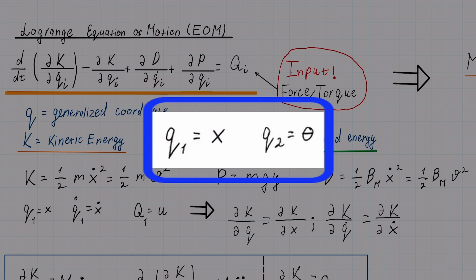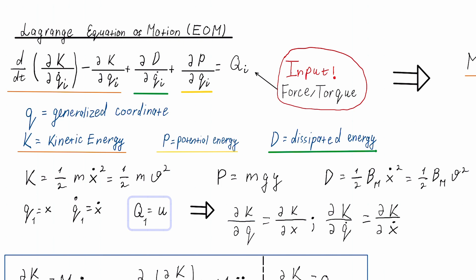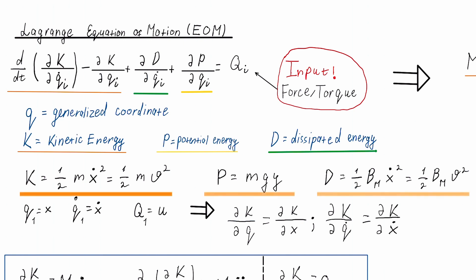The generalized coordinate Q tries to capture that motion, so Q1 for the cart rolling is equal to x, and Q2 for the pendulum rotation is equal to theta. On the right-hand side, we have capital QI, which corresponds to the force directly applied to the generalized coordinate lowercase qi. For the cart, we have capital Q1 equal to U, the force directly applied on the cart. And capital Q2 is equal to the torque applied to control the pendulum arm. First, we need to describe our kinetic, potential, and dissipated energies.